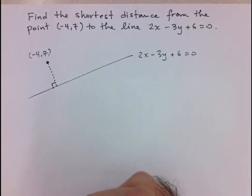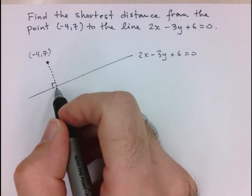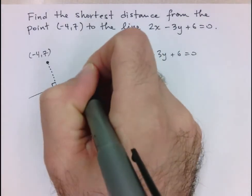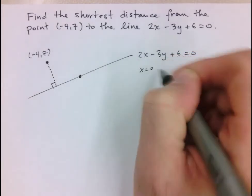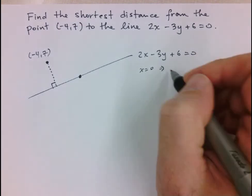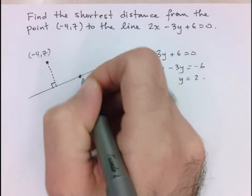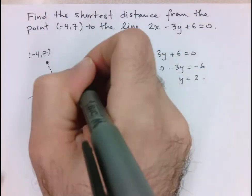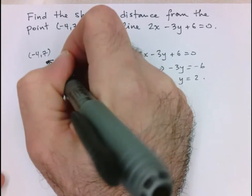We're going to see if we can apply some of our new techniques to solve this much more quickly. We're going to solve this problem without ever finding out what that point of intersection is. What I'm going to do is find any point on this line. The numbers are very nice, so I'm going to choose x equals 0 and find the y value. That gives me negative 3y equals negative 6, and so y equals 2. So I know the point 0, 2 is on this line, and I'm going to create a vector from this point to the point negative 4, 7, which I'm trying to find the distance to. I'll call that u.